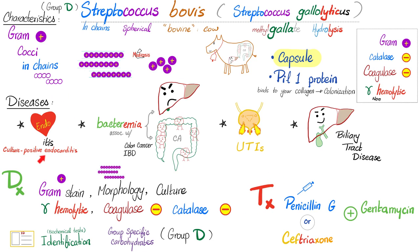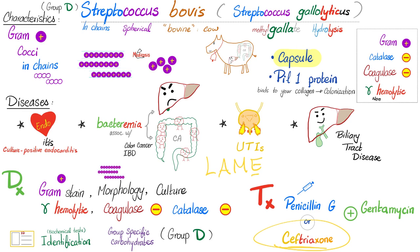For management, remember how endocarditis caused by Enterococci was treated — with penicillin plus gentamicin, or a cell wall synthesis inhibitor plus an aminoglycoside. The same approach applies here. The key difference is that cephalosporins cannot cover Enterococci, but they do cover Streptococcus bovis. Remember: cephalosporins are LAME — they cannot cover the E, which stands for Enterococci. But they can cover Streptococcus bovis.